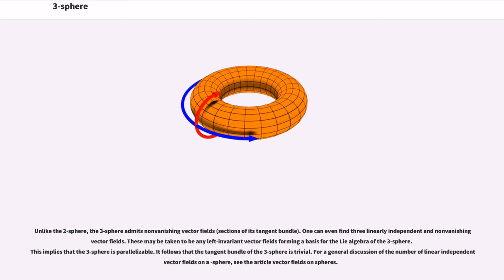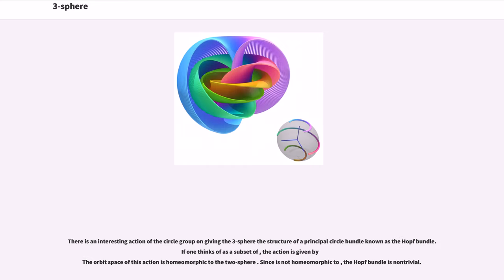It follows that the tangent bundle of the three-sphere is trivial. For a general discussion of the number of linearly independent vector fields on a sphere, see the article Vector Fields on Spheres. There is an interesting action of the circle group on giving the three-sphere the structure of a principal circle bundle known as the Hopf bundle. If one thinks of as a subset of, the action is given by the orbit space of this action is homeomorphic to the two-sphere.